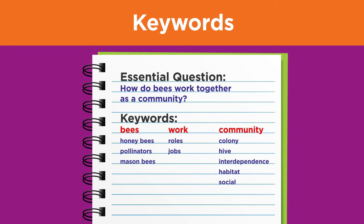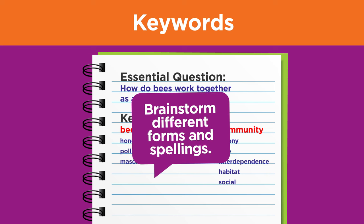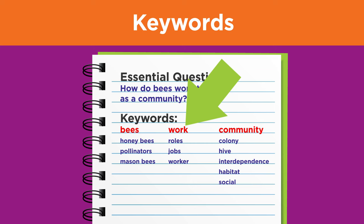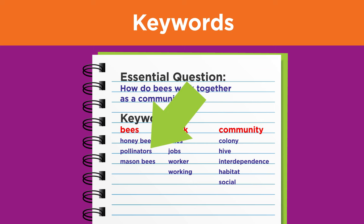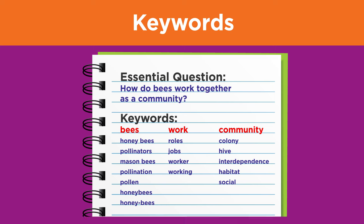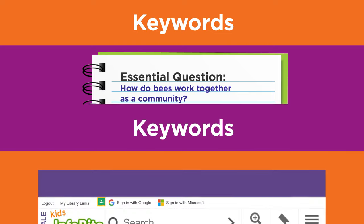Next, brainstorm different forms and spellings of your main idea words. For example, different forms of work would be worker and working, while different forms of pollinators would be pollination and pollen. An example of different spellings for honeybees could be as a single word or as a hyphenated word. Here's an example of how using keyword variations can change the results of your search.